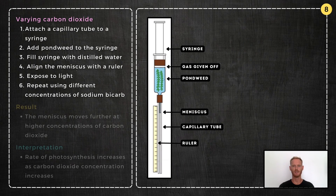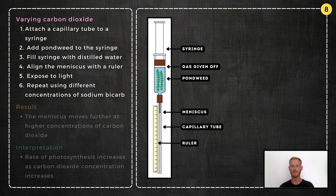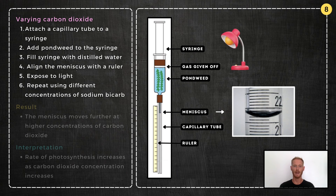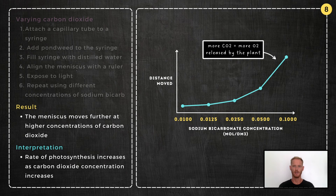Experiment 8: Investigate the effects of varying carbon dioxide concentration on the rate of photosynthesis. Attach a syringe to a capillary tube, remove the plunger, and add two or three pieces of pondweed with the stems facing upwards. Place a finger over the end of the capillary tube, fill the syringe with distilled water, and push the plunger down so that no air is trapped and the meniscus and ruler are aligned. Set up a lamp at a fixed distance from the syringe, and after three minutes, measure how far the meniscus has moved. Repeat using different concentrations of sodium bicarbonate solution and plot your results on a graph. The meniscus moves further at higher concentrations, as more carbon dioxide results in a faster rate of photosynthesis and therefore a faster rate of oxygen release.